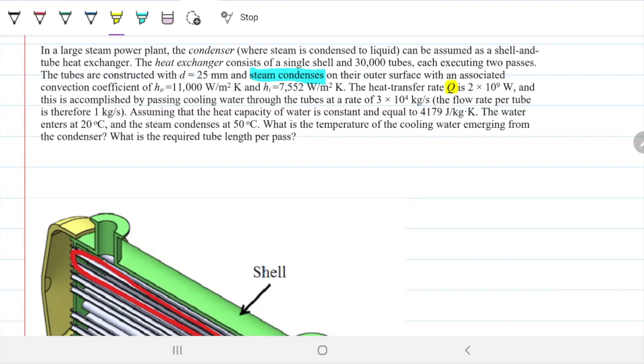Because we have 30,000 tubes, that means each tube has 1 kilogram per second of water flowing through it. Assuming the heat capacity of water is constant and equal to 4179, the water enters at 20°C and the steam condenses at 50°C. What is the temperature of the cooling water emerging from the condenser side? What is the required length per pass? There's no mention of NTU or the C sub P of the steam, so we can infer this is not an NTU problem. This will be a delta T log mean problem.